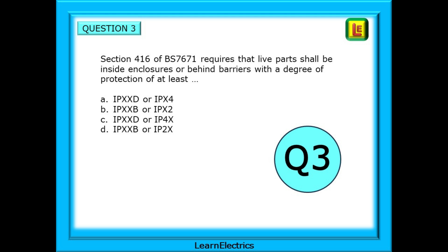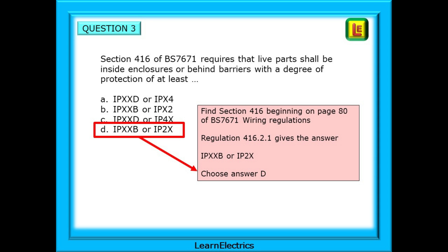Question 3 asks: Section 416 of BS 7671 requires that live parts shall be inside enclosures or behind barriers with a degree of protection of at least — and then four choices. The question tells us it is in section 416, which begins on page 80 of BS 7671. Regulation 416.2.1 gives us the answer: IPXXB or IP2X — choose answer D.